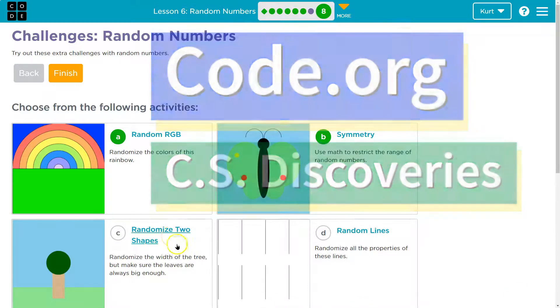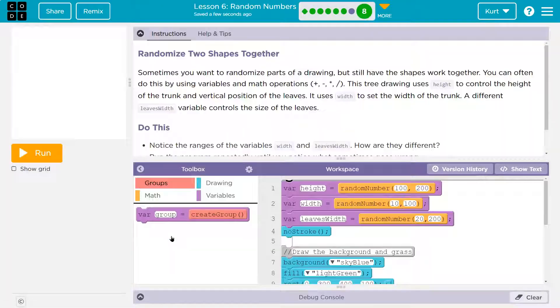This is code.org. Let's take a shot at randomizing two shapes. Randomize two shapes together.